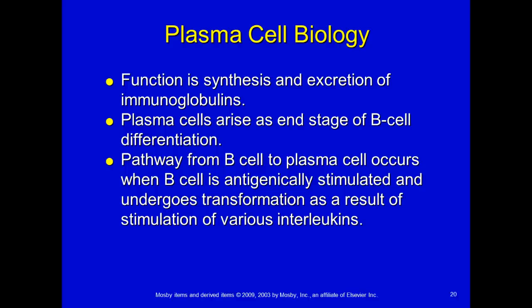With plasma cell biology, the function is synthesis and secretion of immunoglobulins. They arise as end-stage B cell differentiation. The pathway from B cell to plasma cell occurs when a B cell is antigenically stimulated and undergoes transformation as a result of stimulation from interleukins — the communication signals between white blood cells.